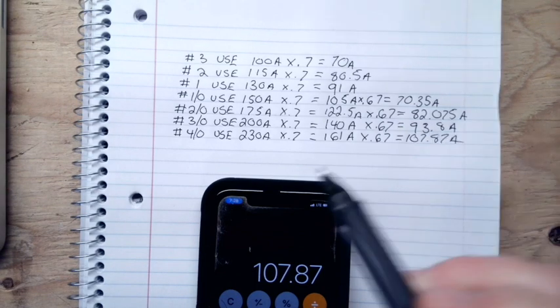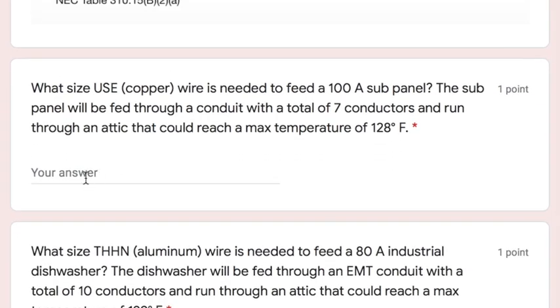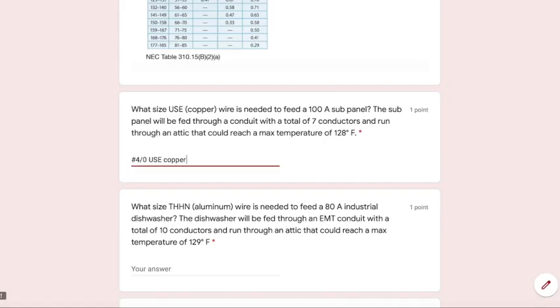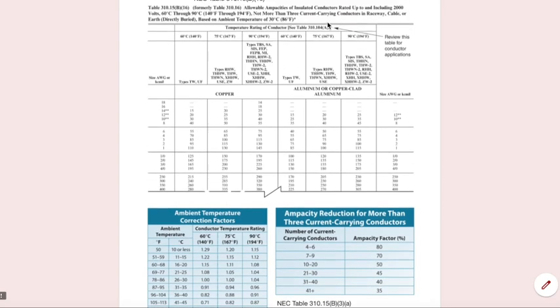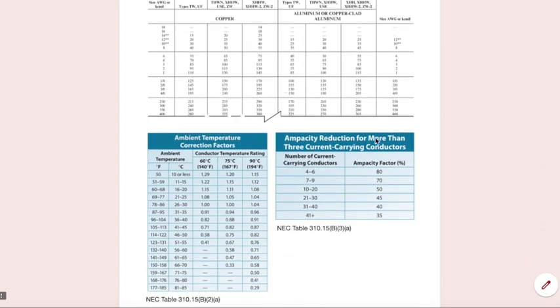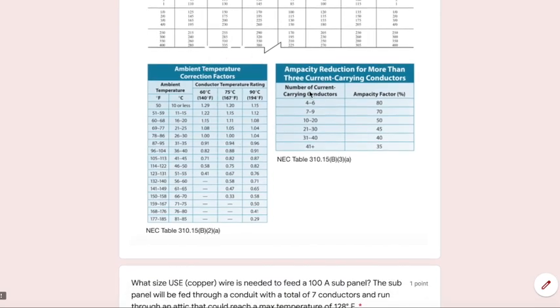So for this question, to answer it, we need a number four-ought, 4-0, U.S.E. copper. This really isn't very hard, right? It's about knowing where to find the information on these tables. We start off with the 310-15B-16, then we apply adjustment factor if we need to, and we apply correction factor if we need to. It's important that you just see how this stuff links up. Once you figure that stuff out, it's just a procedural process of starting with what works all the way down, or what you think will work all the way until you find what actually works.